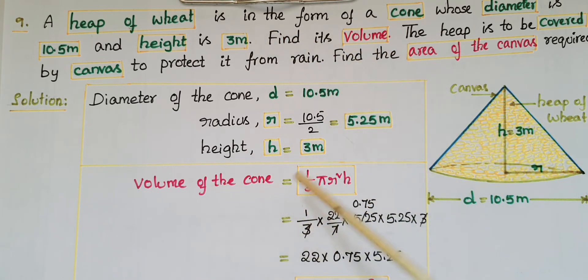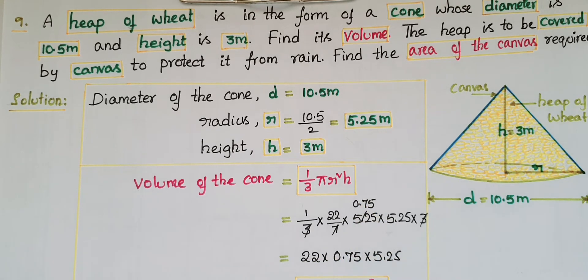Volume of the cone = (1/3)πr²h = (1/3) × (22/7) × 5.25 × 5.25 × 3. After canceling 3 and 7, and calculating 0.75 × 5.25, we get 22 × 0.75 × 5.25.